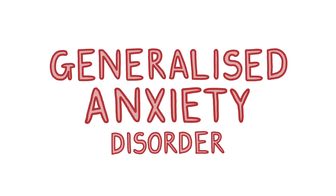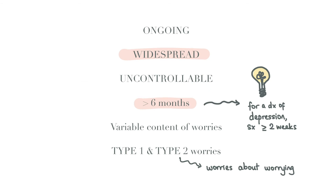Generalised anxiety disorder describes an ongoing, uncontrollable, widespread worry that the patient recognises as excessive and inappropriate on most days for at least six months. The content of the worries may change and vary. Worries about worries are called type 2 worries. In GAD there are both type 1 and type 2 worries, which differentiates it from other anxiety disorders.